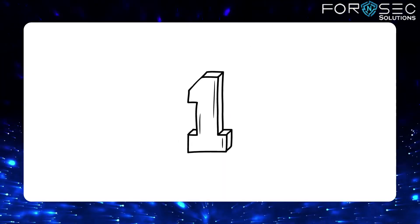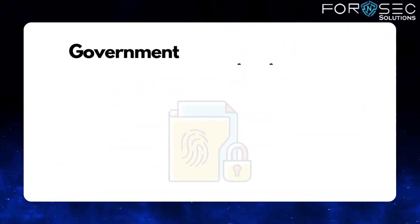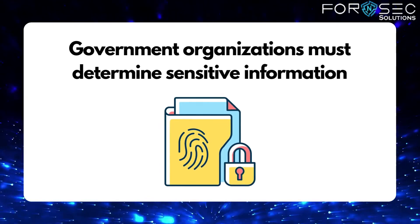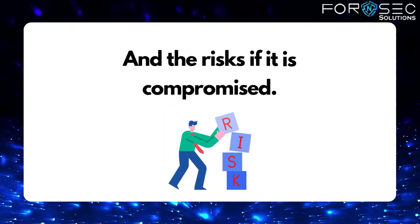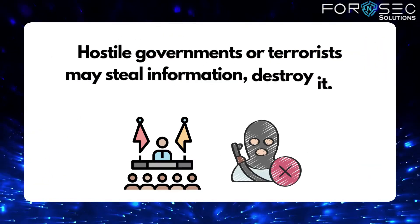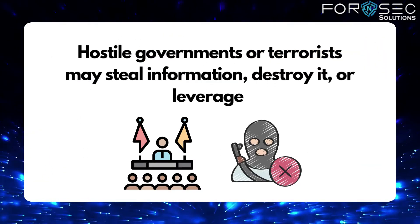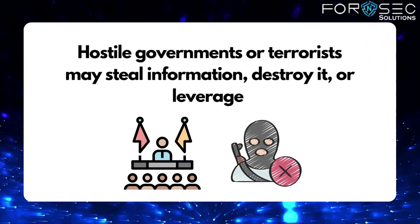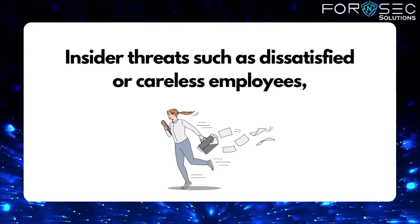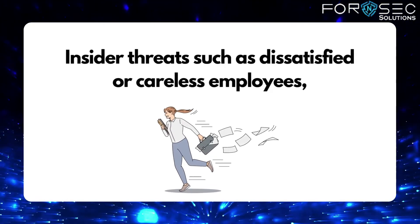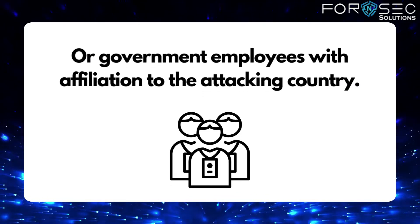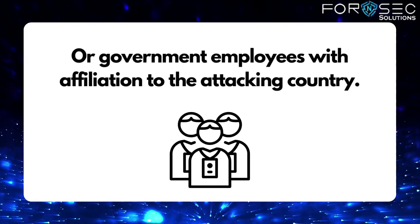The first is Sabotage. Government organizations must determine sensitive information and the risk if it is compromised. Hostile governments or terrorists may steal information, destroy it, or leverage insider threats such as disgruntled or careless employees, or government employees with affiliation to the attacking country.